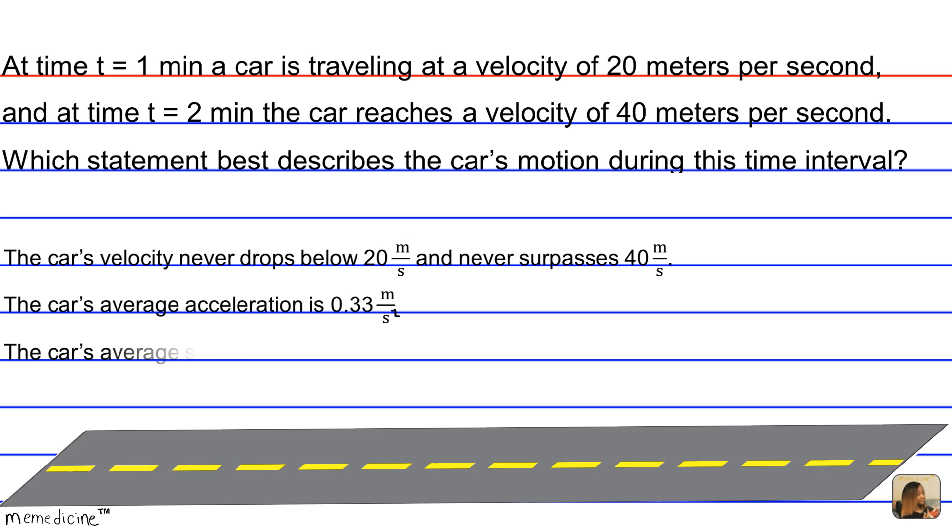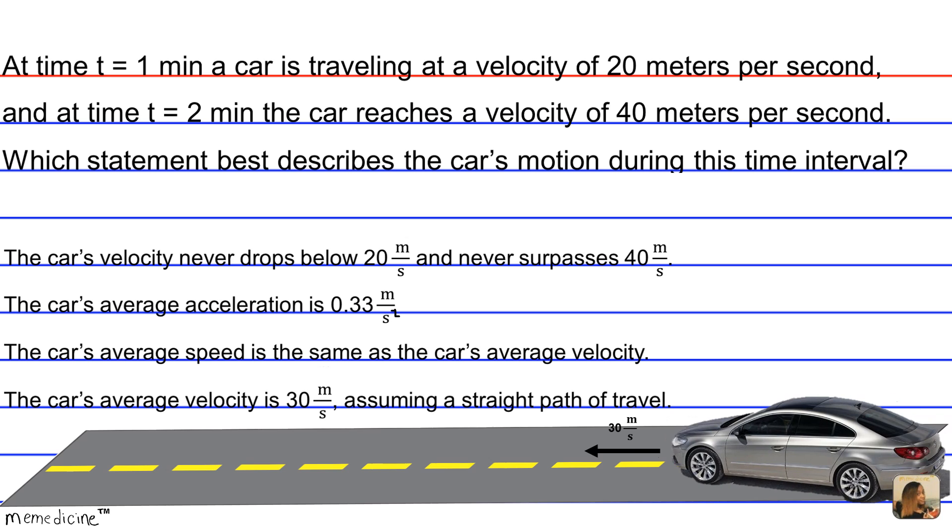Is it C: the car's average speed is the same as the car's average velocity? Or is it D: the car's average velocity is 30 meters per second, assuming a straight path of travel? I'll give you a moment to think and arrive at the correct answer choice. Definitely press pause if you need to.